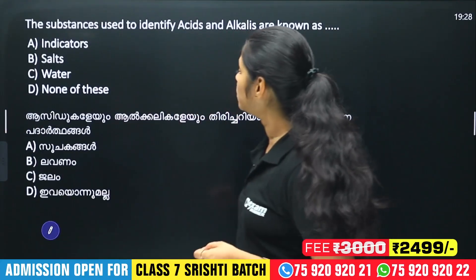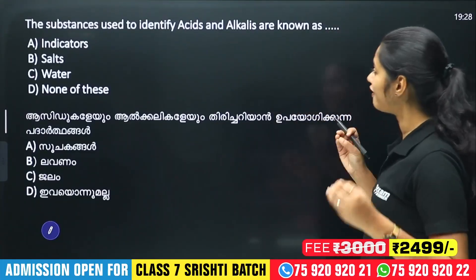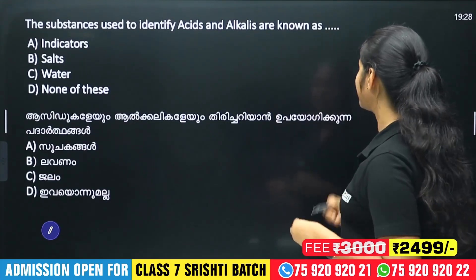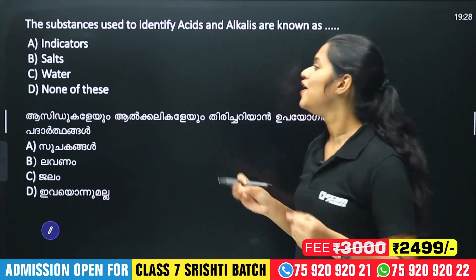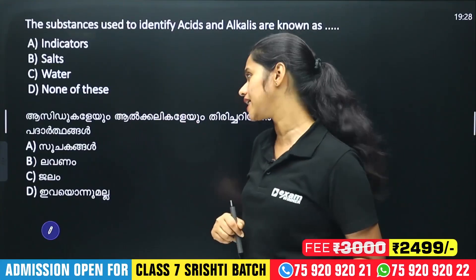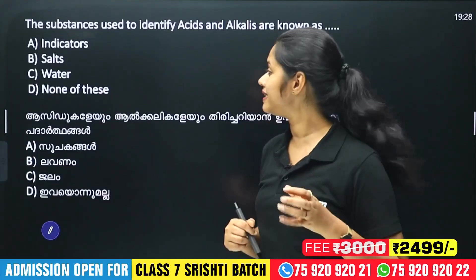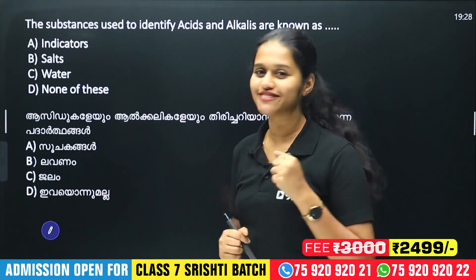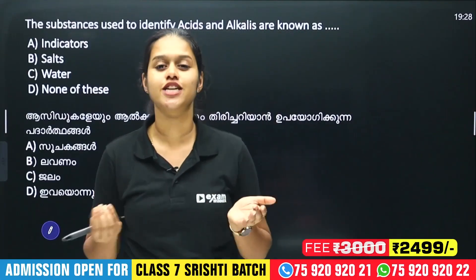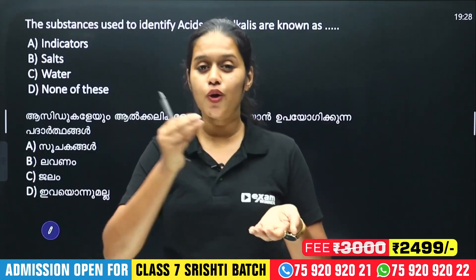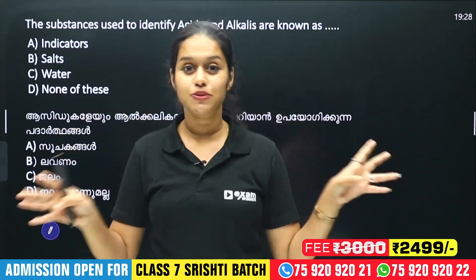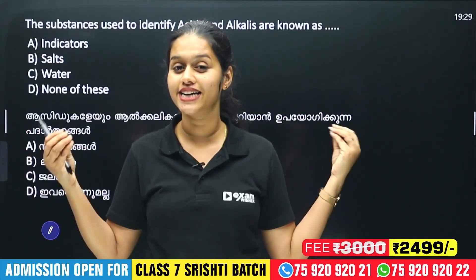The substance used to identify acids and alkalis is known as an indicator. It is important to identify acids and alkalis. We've got one solution in our lab — it's a natural solution. The answer is Indicator.